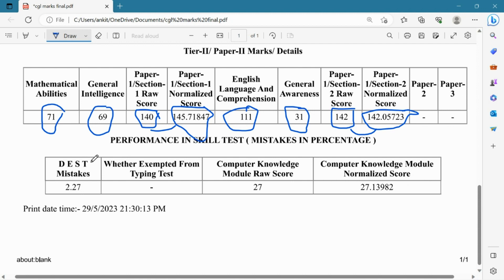After this, we see the typing test has mistakes. I didn't expect it to have mistakes. I have a raw score of 27 and a normalized score of 27.13982. I expected the test to have more normalization in the 7th March shift because it was tough on the computer.